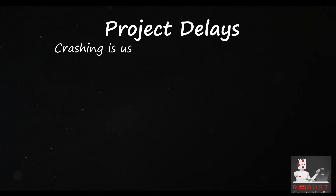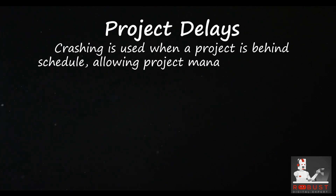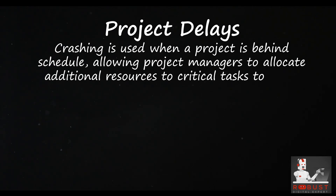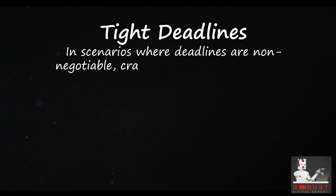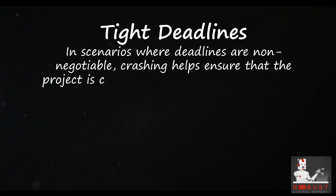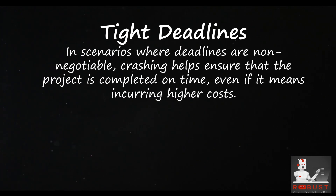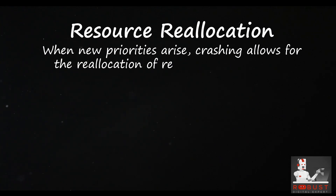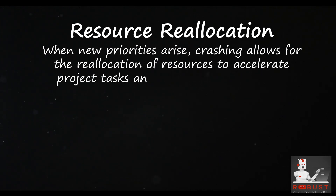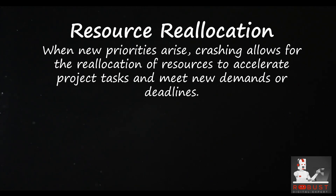Usage — Project delays: Crashing is used when a project is behind schedule, allowing project managers to allocate additional resources to critical tasks to catch up. Tight deadlines: In scenarios where deadlines are non-negotiable, crashing helps ensure that the project is completed on time, even if it means incurring higher costs. Resource reallocation: When new priorities arise, crashing allows for the reallocation of resources to accelerate project tasks and meet new demands or deadlines.